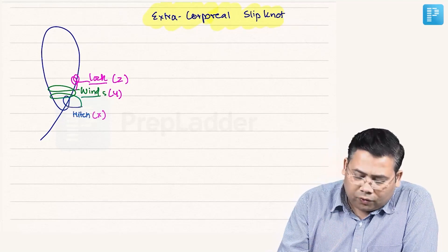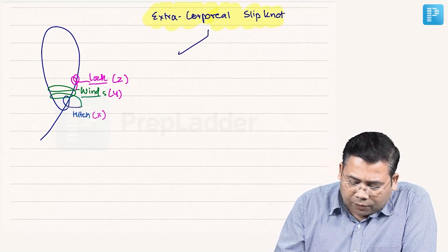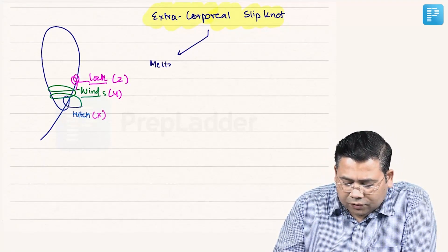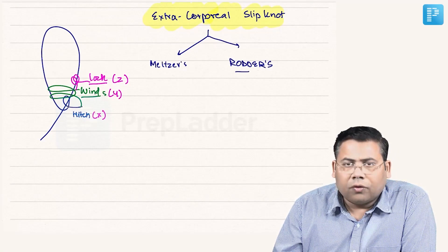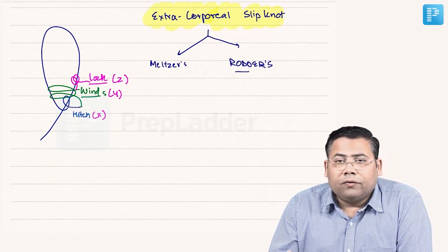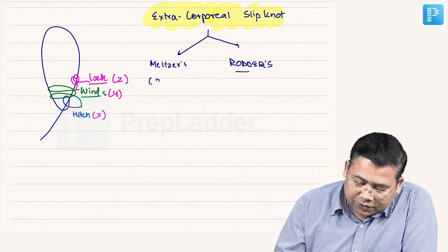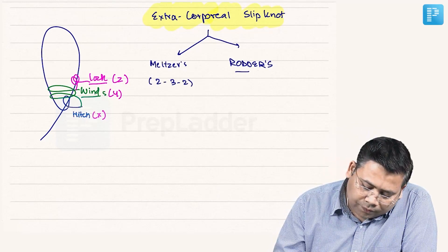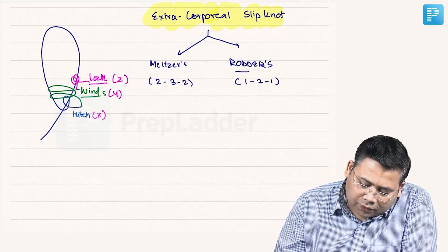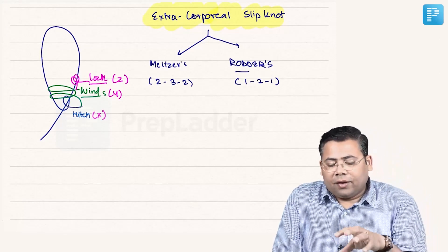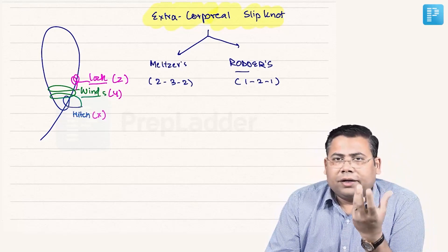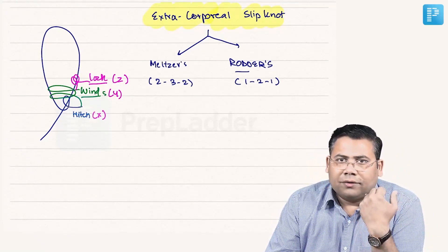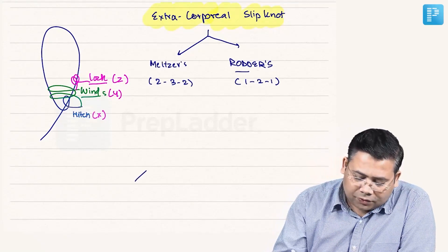Extracorporeal slip knots include the Melzer's knot, the Rodder's knot, and many personal variations. I use my own version which I call the SD's knot — a 2-3-2 pattern — and also a 1-2-1 version. When you come to my institute for laparoscopic training, I also teach these knots. You can even make your own knot very soon once you learn the concept.